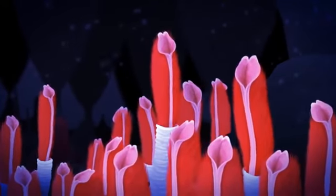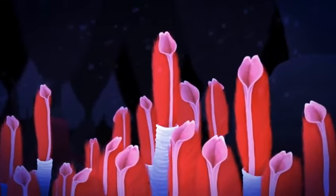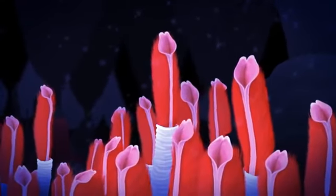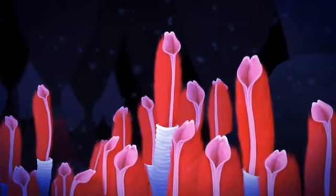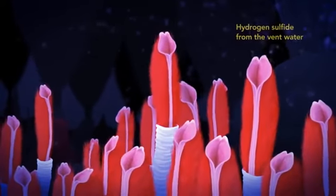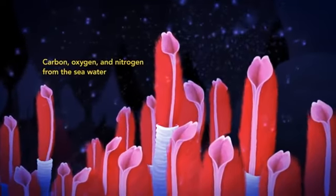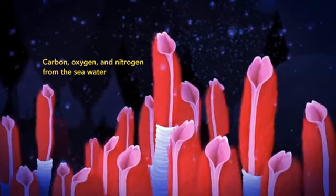The trophosome contains specialized cells that provide a home for sulfur-reducing bacteria. The worms have a feathery respiratory organ that collects everything the bacteria need for their metabolism: hydrogen sulfide from the vent water, and carbon, oxygen, and nitrogen from the surrounding seawater.